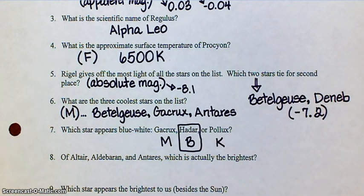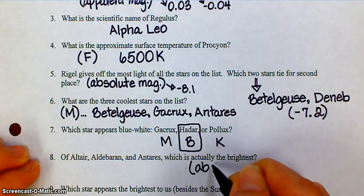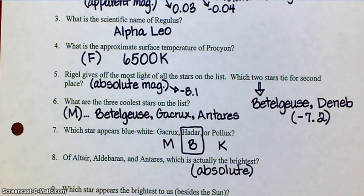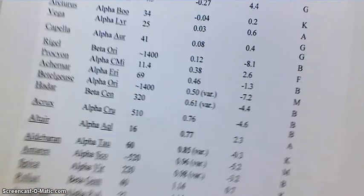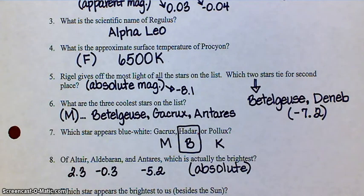Number eight says: of Altair, Aldebaran, and Antares, which is actually the brightest? 'Actually the brightest' is talking about absolute magnitude. So we need to go look up the absolute magnitude of all three of these stars — and it just so happens that they're all together on our chart. Altair: absolute magnitude 2.3. Aldebaran: negative 0.3. Antares: negative 5.2. Remember that when you talk about magnitude, the smaller the number the brighter the star. So the most negative number is the one for Antares — Antares is the brightest of these three stars.